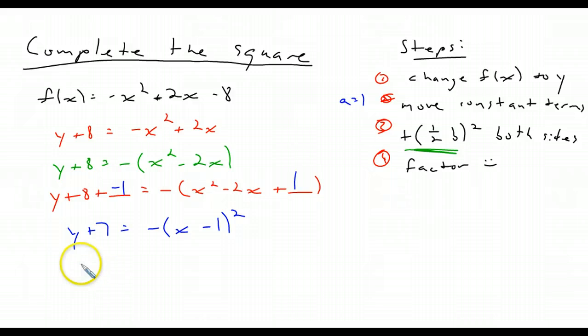And again, change it to f of x and move over your 7. So f of x equals negative x minus 1 squared minus 7. And there it is, completed the square. Once again, just to check, I have negative 2. That is divided by 2. So b divided by 2 is negative 1. So there we go. We're done.